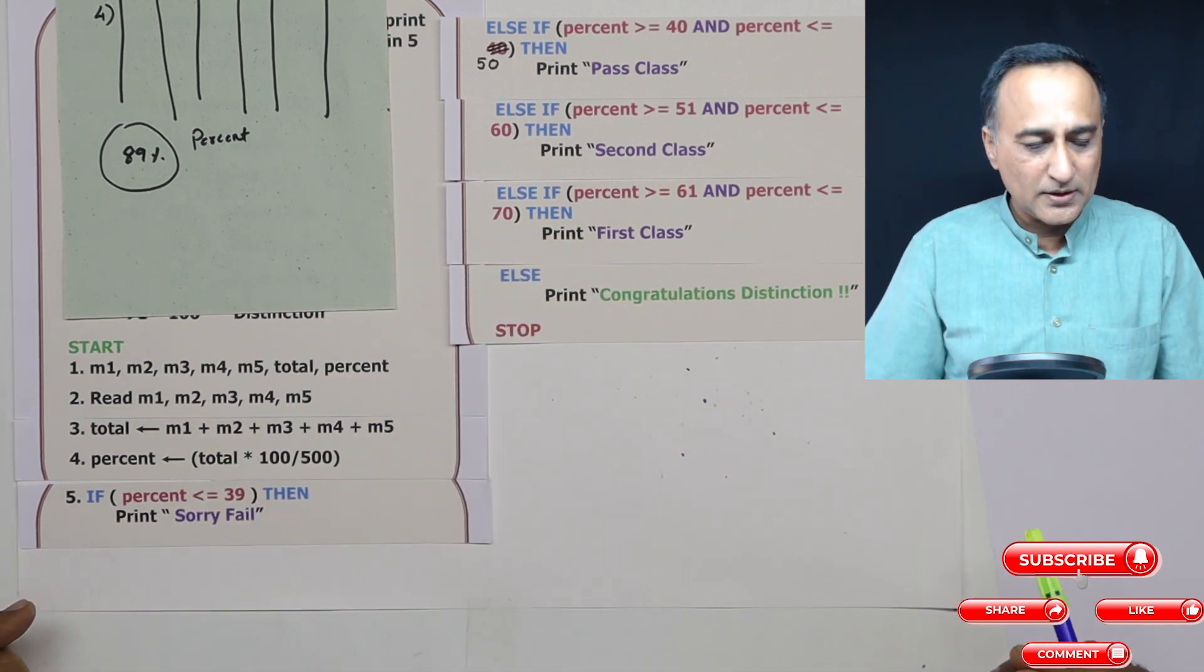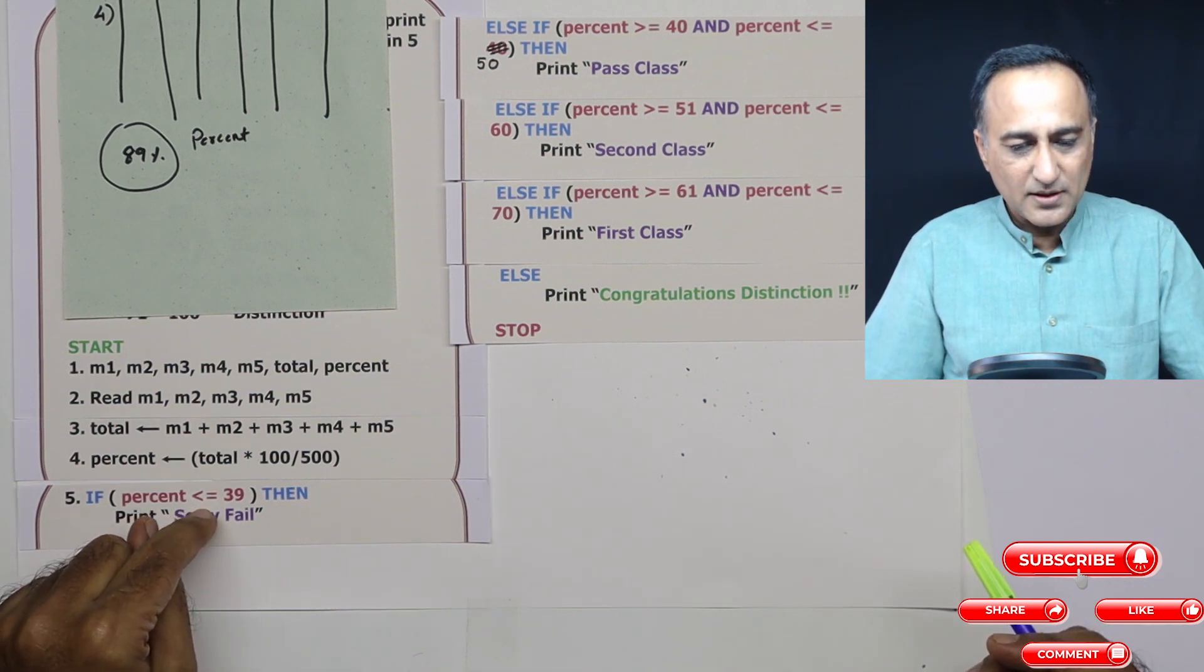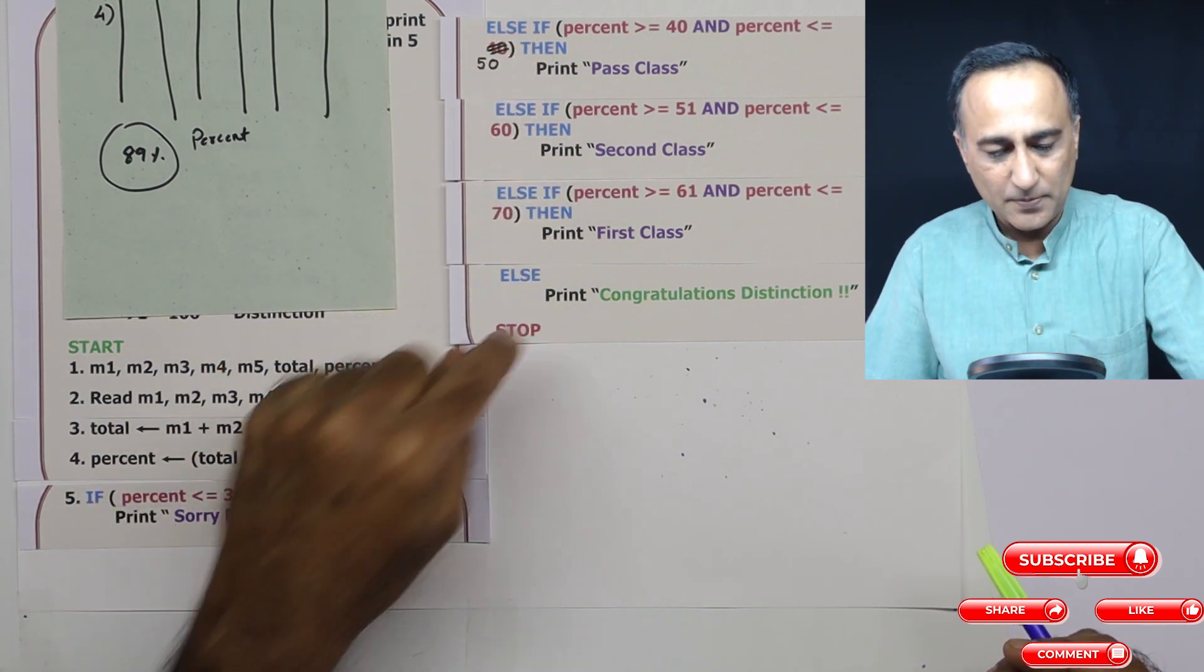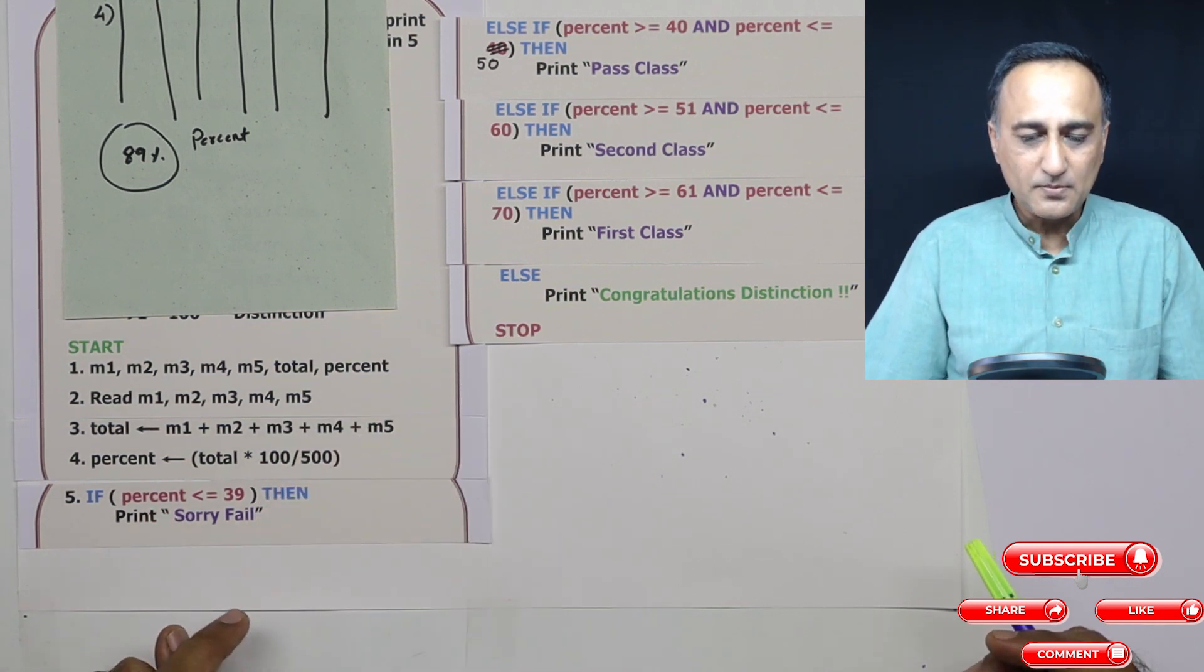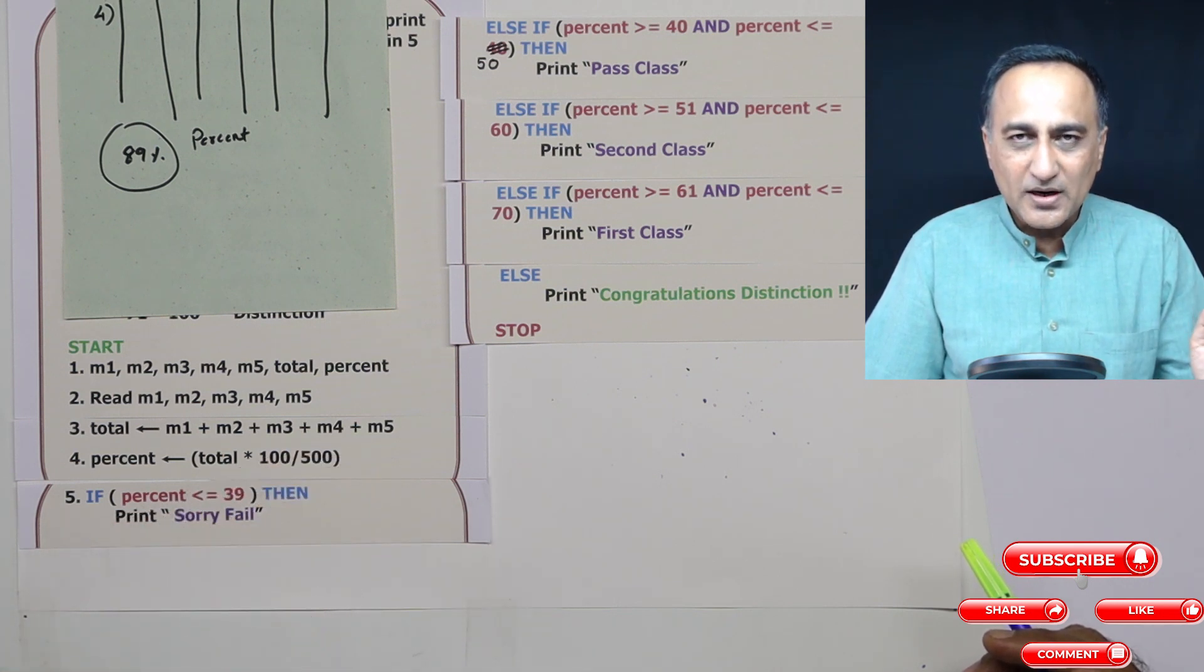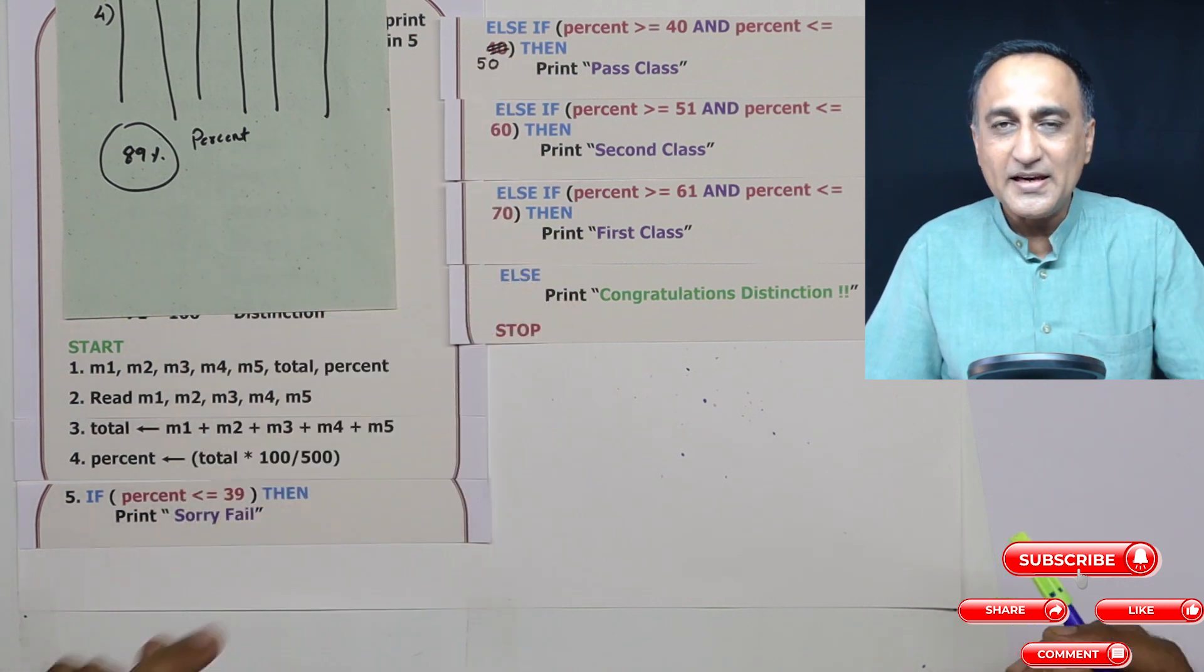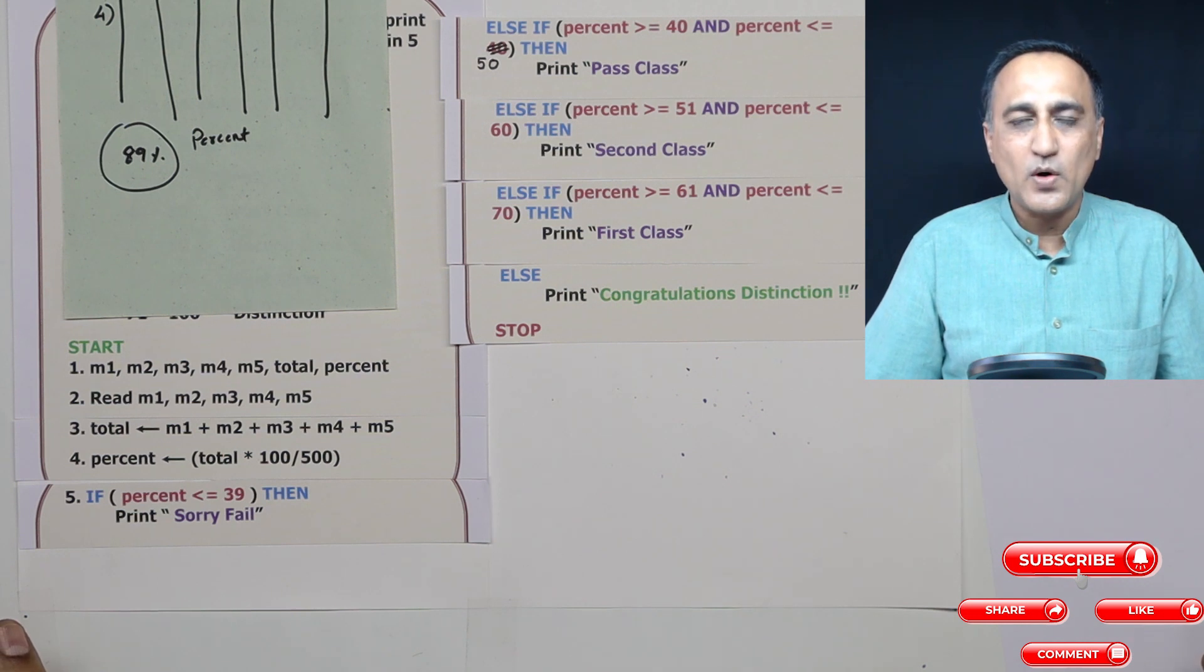Just one important thing to learn so that you don't forget it. If this condition is true, the program will not go to any of this, it will directly come and stop. That means if somebody has got say 35%, it will print sorry fail and stop. So in the if, else if, else if, else, only the condition which is true will get executed. If none of the conditions are true, then automatically assuming there is an else, the else will get executed and you will halt. So I hope this clarifies your understanding of one more programming logic assignment using algorithm.